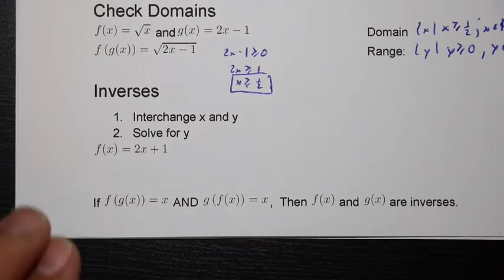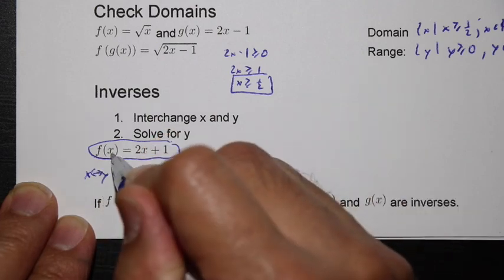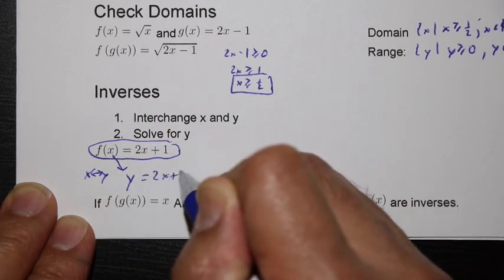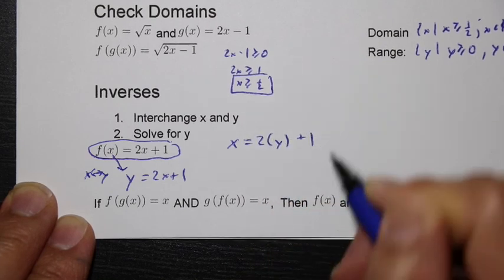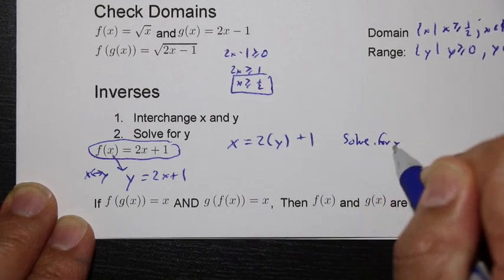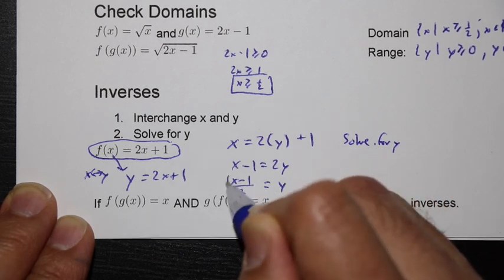Inverses. When we're talking about finding inverses, we take a function, let's take a look at this function. We're going to interchange x and y. So that means we'll replace f of x with y. We have 2x plus 1. Now interchange. That means the y became the x. The x becomes the y. And now we're going to solve for y. So here, x minus 1 is equal to 2y, and y is equal to x minus 1 divided by 2. Here is the inverse.